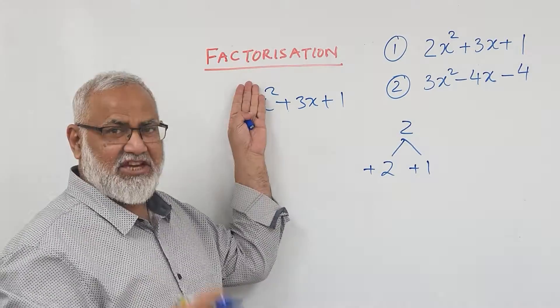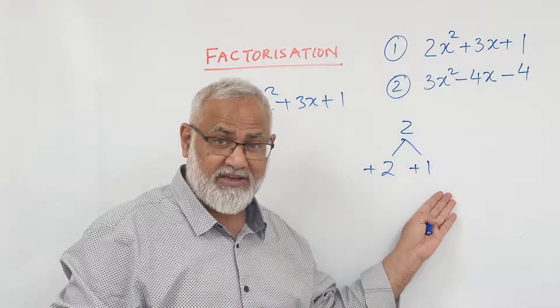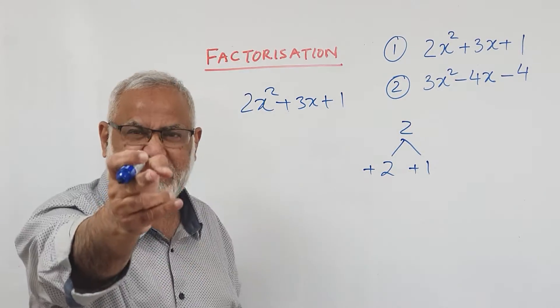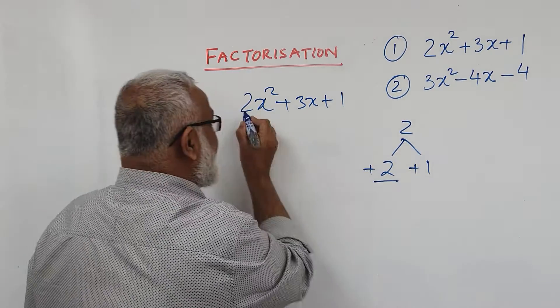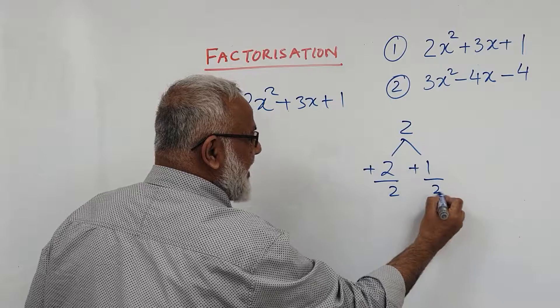If there is no coefficient here, then your answer will be x plus 2 and x plus 1. But because there's a coefficient, there is a technique. You divide this by this coefficient and divide this by the same coefficient.